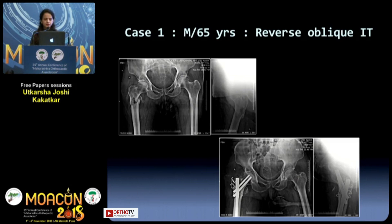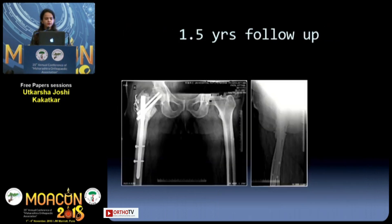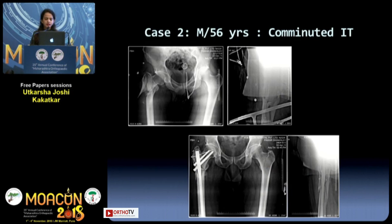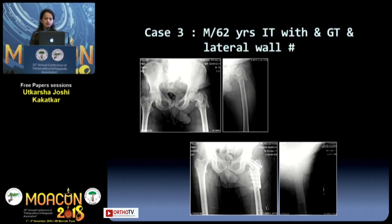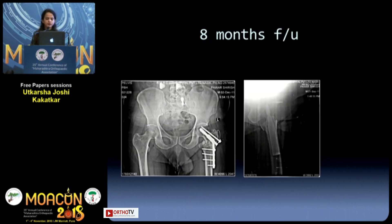A few case examples: Case 1, a reverse oblique IT fracture, was fixed using a PFN, K-wires and a cerclage wire — the 1.5-year follow-up shows good union. Case 2, a comminuted IT fracture with a lateral wall breach, was fixed using the proximal femoral nail with augmentation using trochanteric wiring — a 1-year follow-up shows good results. Case 3, an IT fracture with a lateral wall and greater trochanter fracture, was fixed using a DHS, derotation screw and an encircling wire — the 8-month follow-up shows good signs of union.